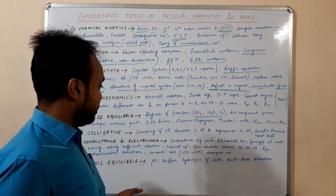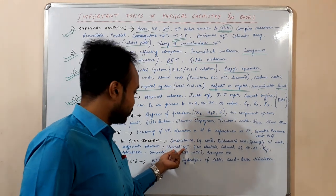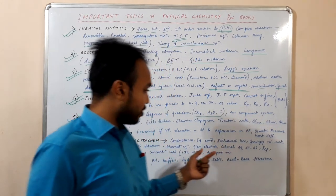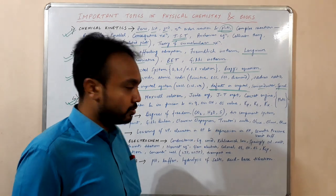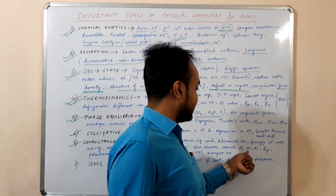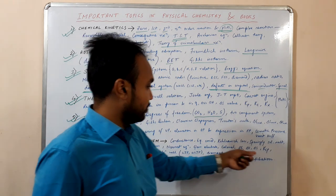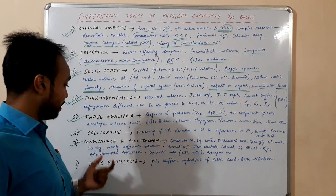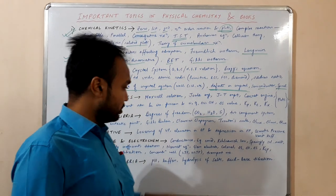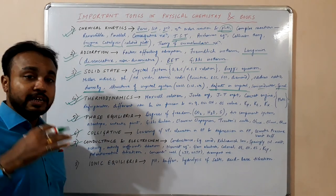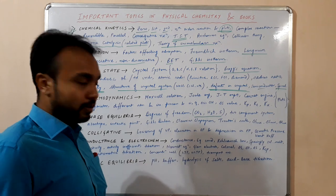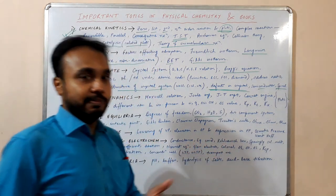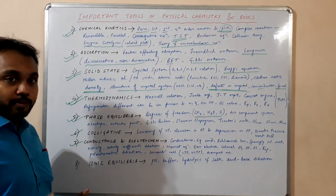Then precipitation reactions. Then the Nernst equation. Then glass electrode, calomel electrode, quinhydrone electrode, and everything. Then delta G, delta H, delta S values. Then KSP values. Then potentiometric titration — this is an important topic. Then concentration cell — with liquid junction potential as well as without liquid junction potential. And then transport number: T+ and T-, and the relation between T+ and ionic mobility U+.